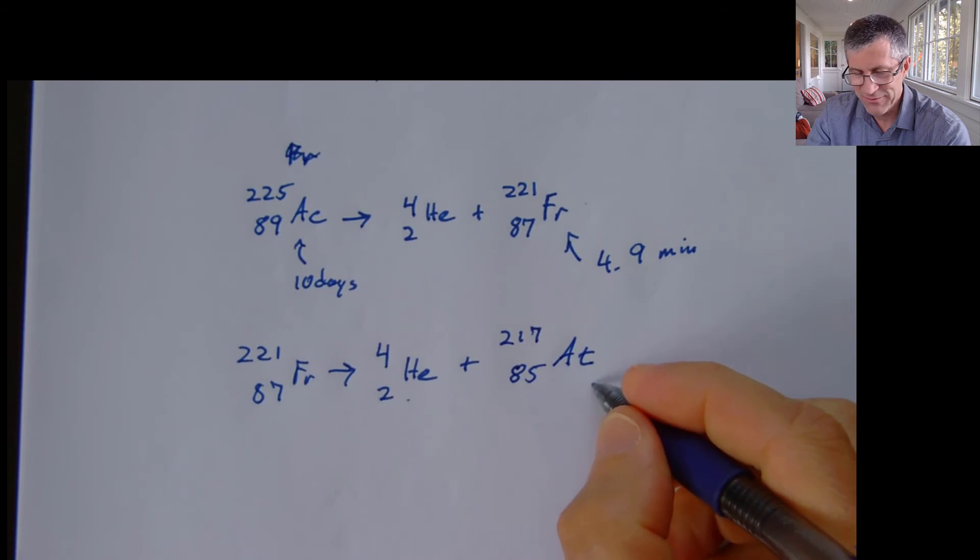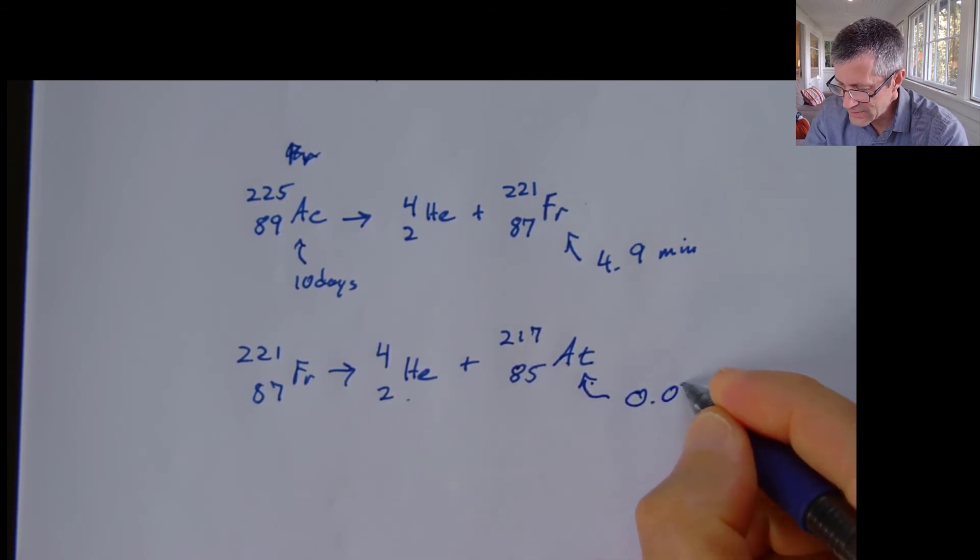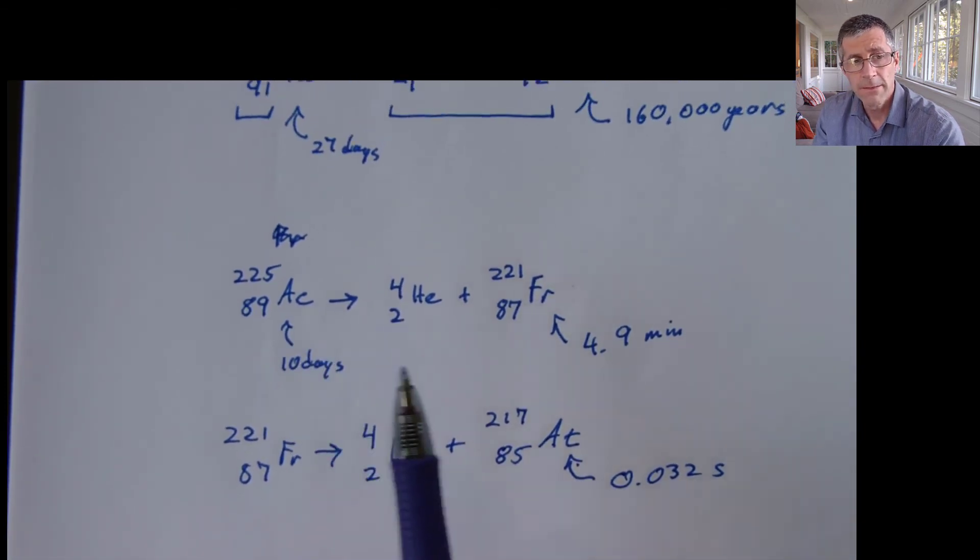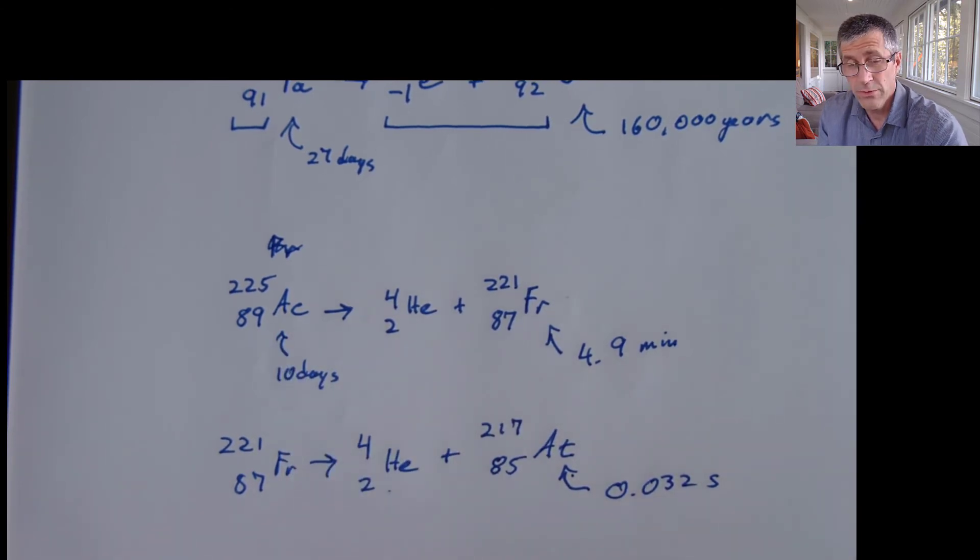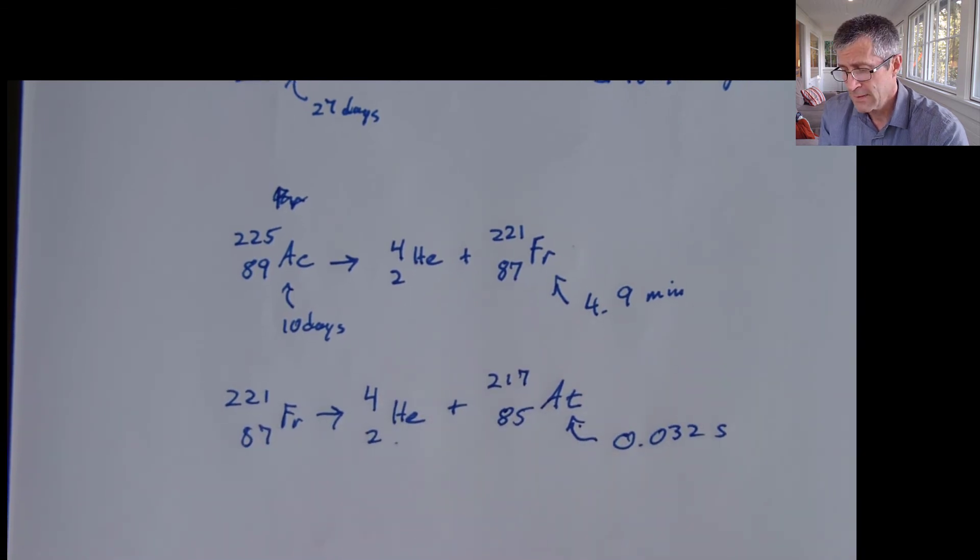So it was astatine. And this has a half-life of 0.032 seconds. So it doesn't last long. Anyway, so this is what I'm asking you to be able to do. So I might give you something that you start with and tell you what particle is produced. I could give you the thing that's produced and the particle and ask you where it came from. And the third thing I could do is I could give you two elements and ask you what particle must have been produced. Anyway, I hope that's helpful. I'll talk to you soon.